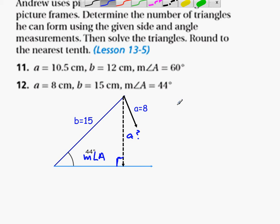So we'd start off by saying sine of 44 degrees is equal to a over 15.